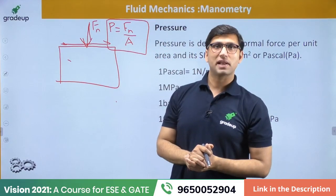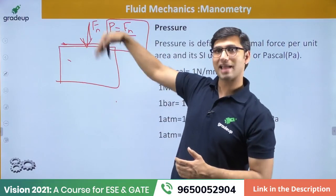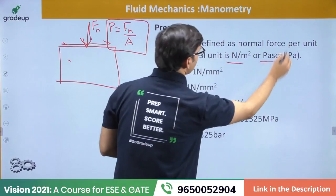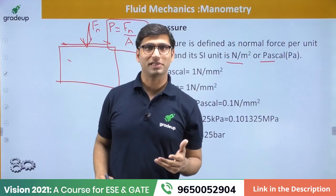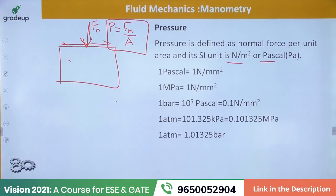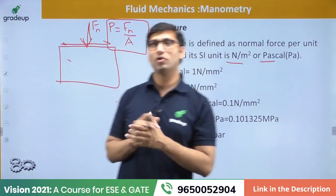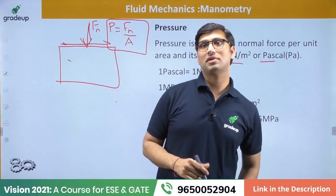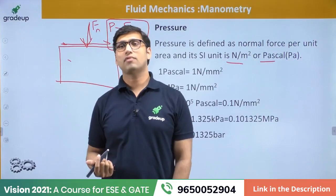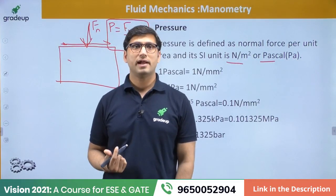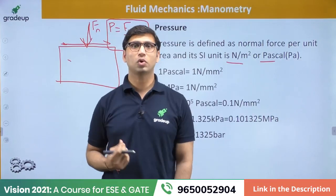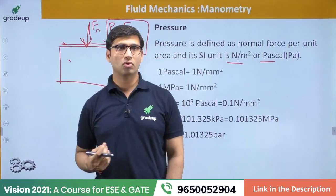Pressure acts normal to the surface on which it acts — that is why it is called normal force per unit area. The SI unit is Newton per meter square or Pascal. One Pascal equals one Newton per meter square. Arun Kumar, it is very good that you have purchased our Vision 2021 course. We started classes from 20th January and the industrial subject is about to be completed.